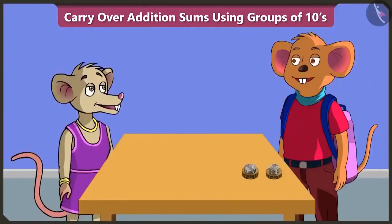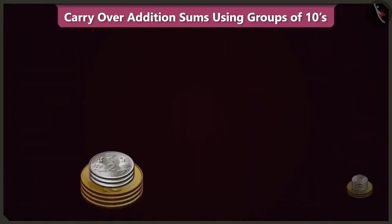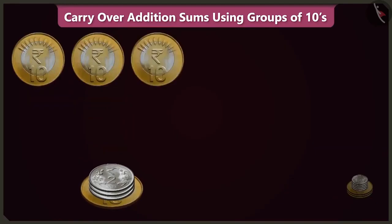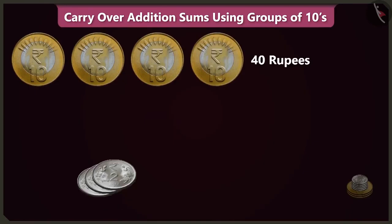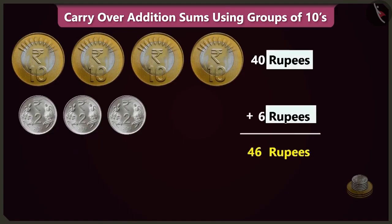Hey Chichi, help me count these coins. Yes, sure Choo Choo. In this pile of coins, there are 1, 2, 3 and 4 coins of 10 rupees which is 40 rupees, and 3 coins of 2 rupees that is 6 rupees. So, 40 and 6: there are 46 rupees.